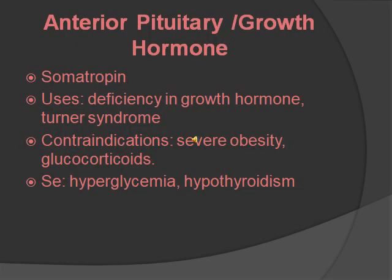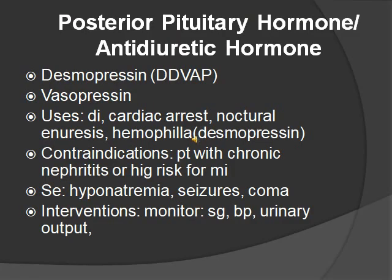Anterior pituitary — growth hormone increases the production of insulin-like growth hormones. The medication is somatropin, used for growth hormone deficiency or Turner syndrome. Contraindicated with severe obesity and glucocorticoids. Side effects are hyperglycemia and hypothyroidism. A hint: 'soma' means body, helping you remember it's the growth hormone. Antidiuretic hormone helps reabsorption of water in the kidney and causes vasoconstriction. Medications are desmopressin (DDAVP) or vasopressin. Uses include diabetes insipidus, cardiac arrest, nocturnal enuresis, and hemophilia. Contraindicated in chronic hepatitis or high MI risk. Side effects are hyponatremia, seizures, and coma. Monitor specific gravity, blood pressure, and urinary output.